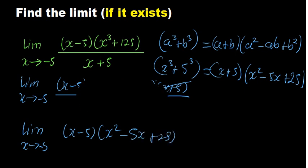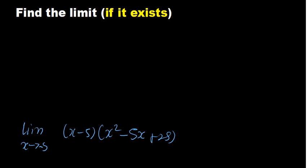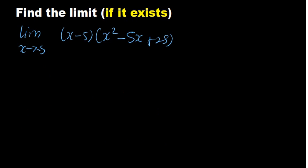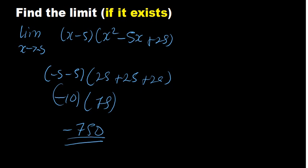Substituting x = minus 5: (minus 5 minus 5) gives minus 10; (minus 5)² is 25, minus 5 times minus 5 is plus 25, plus another 25 gives 75. So this is minus 10 multiplied by 75, which gives minus 750 — the same answer as from L'Hôpital's Rule. You observe there are several ways of answering the same question; you just need to decide which method is most convenient for you.